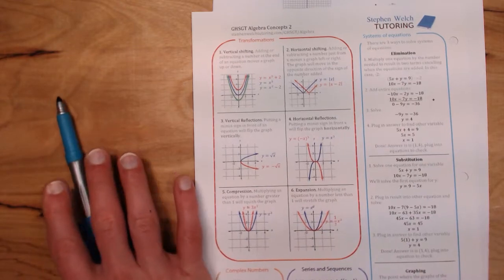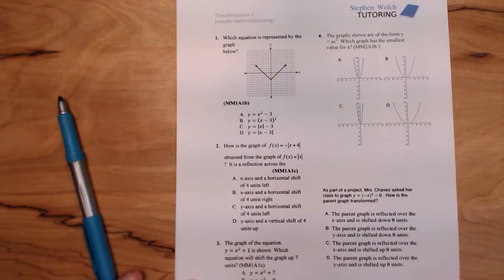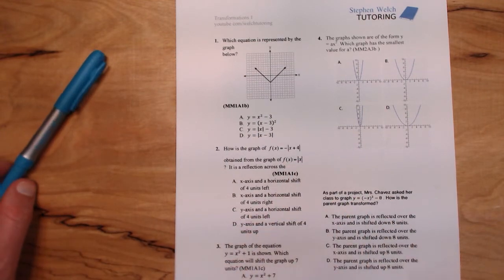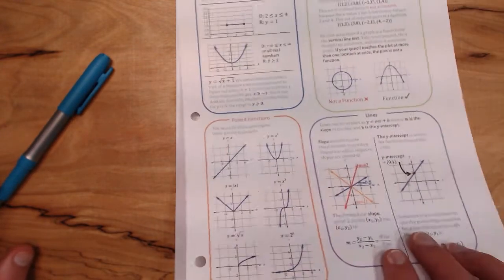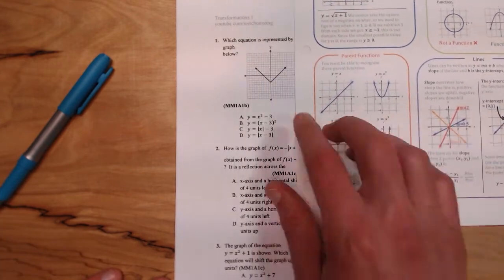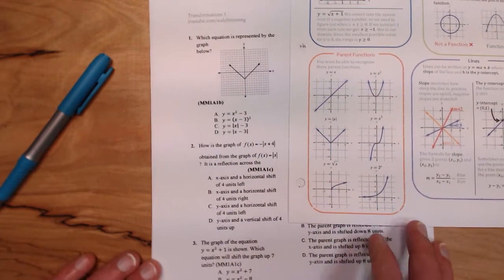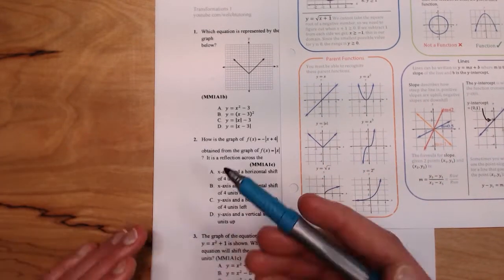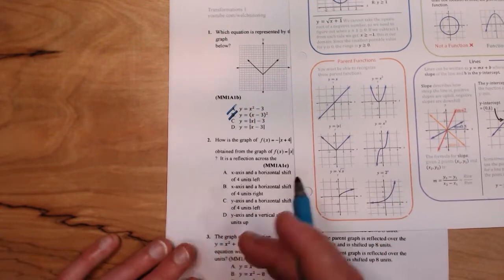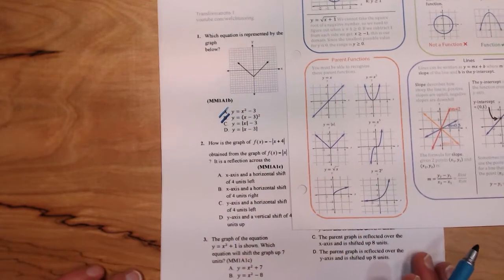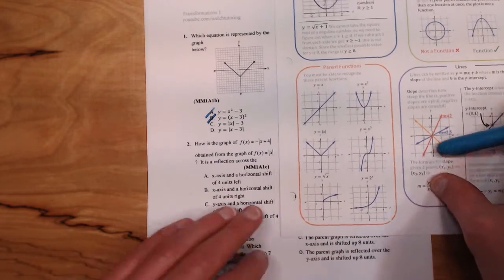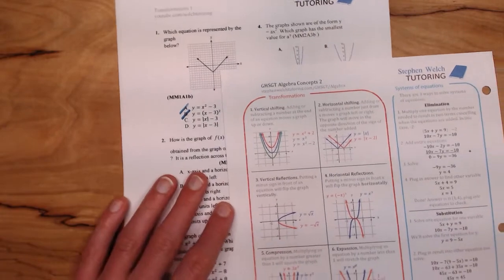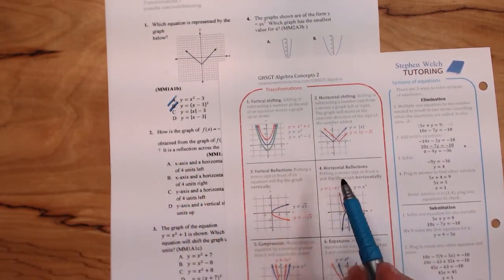Here we are back here. It says which equation is represented by the graph below. First things first, we need to match the parent function. Here's my six parent functions, and which one does this look like? We see that it looks like the absolute value. So that's great. Right away we can eliminate A and B, so I already have a pretty good chance of getting the answer right. Next we need to figure out what kind of transformation it is.